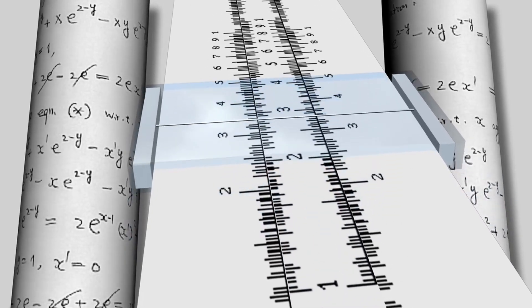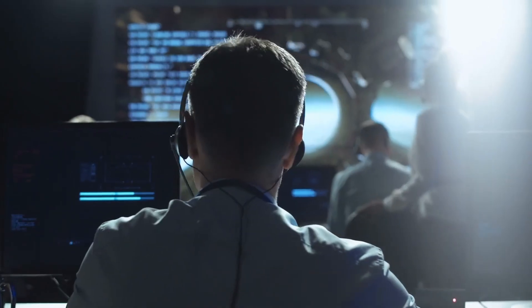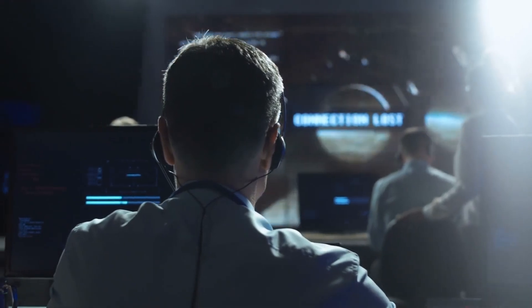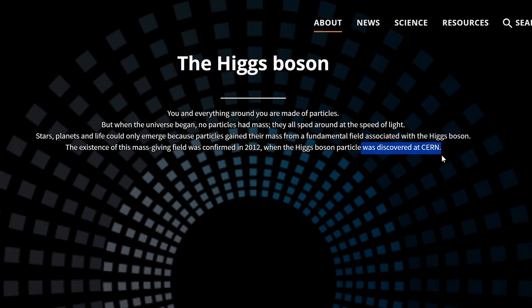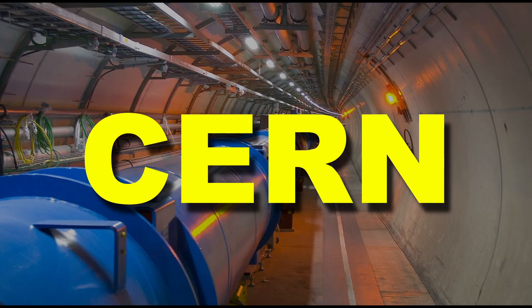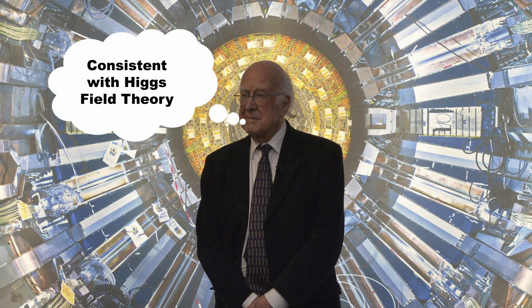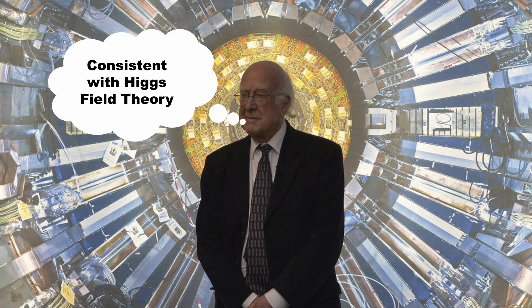Now that the theoretical framework was in place, scientists were set to actually detect the Higgs boson. After years of experiments and analysis, on July 4th, 2012, the Higgs boson had been discovered. Scientists at CERN had detected a particle consistent with the properties predicted by the standard model.